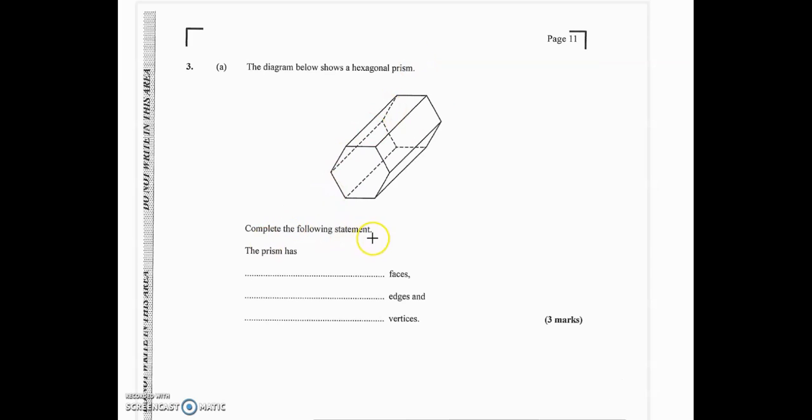All right, now it says complete the following statement. The prism has dash faces. Good, and there are several ways to go about this question. The fact that it's a hexagonal prism, it means going around, you're actually going to have six faces going around. If you call this the bottom, that would make one face, that's seven, and the top would make another face, which would make it eight faces. And of course, you know the faces are flat surfaces.